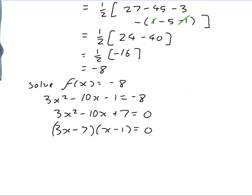So that gives 3x minus 7 equals 0 or x minus 1 equals 0, meaning x equals 7 thirds or x equals 1. And 7 thirds equals 2 and 1 third.